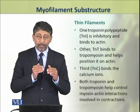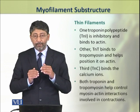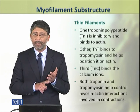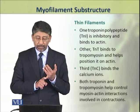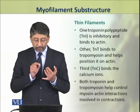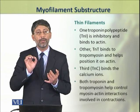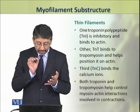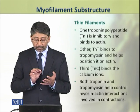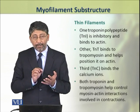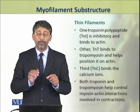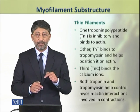The Troponin polypeptide is a three-polypeptide complex with three different types of polypeptides. These include TNI, which is inhibitory and binds to the Actin. The second is TNT, which binds with the Tropomyosin and helps to position it on the Actin.